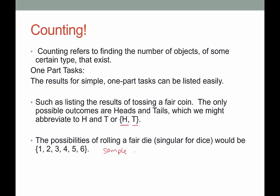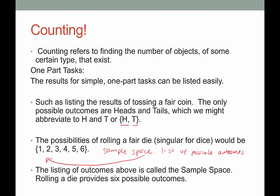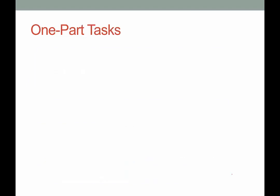Maybe not in this video, but we will talk about it. The sample space is just a listing of all the possible outcomes. Rolling a die provides six possible outcomes, and flipping a coin provides two possible outcomes.